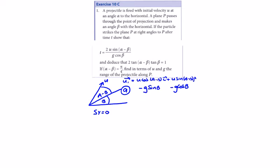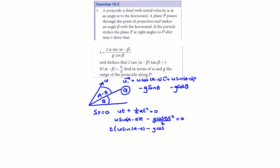Let's set up our equations. We need the time of flight when s_y = 0. Using s = ut + ½at², we get u·sin(a−b)·t − (g·cos(b)/2)·t² = 0. Tidying up: u·sin(a−b) − g·cos(b)·t = 0, so t = 0 or t = 2u·sin(a−b) / g·cos(b), which is what they wanted.